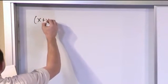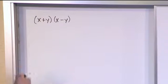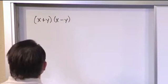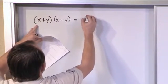what if you have x plus y, this is kind of a review, times x minus y. How do you multiply these two binomials together? Well, you can do FOIL, right? So you have first terms, which is going to be x squared multiplied together.